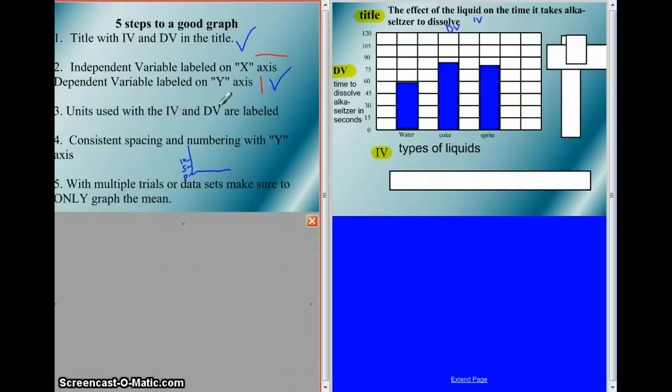Units with the independent and dependent variable are labeled. We only had one unit and that was seconds and it is labeled. We have consistent numbering and spacing along the y-axis. We have an even amount of space in between each number and we're going up by 15 each time. Multiple trials or data sets. Make sure to only graph the mean. In this case we had multiple trials and this was the mean of all the trials for water, all the trials for Coke, and all the trials for Sprite. So, yes. We've done that.